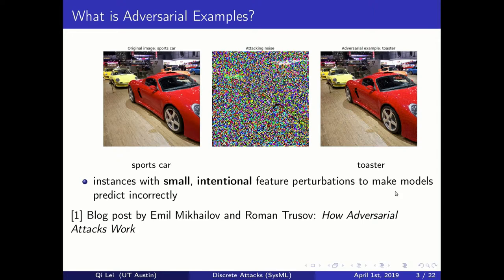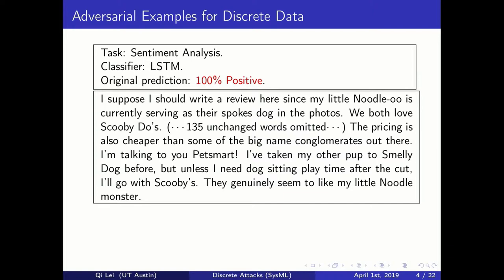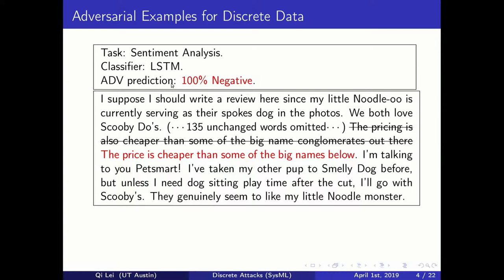This phenomenon not only applies for continuous data, but also for discrete data. Take this as an example: this is a Yelp review about a pet shop called Scooby-Doo's, and our task is to do sentiment analysis to tell if this is positive or negative. We can tell from the language that this is very positive, and the model can predict it as 100% positive. However, by conducting our adversarial attack, we can completely flip the prediction to 100% negative by simply paraphrasing one sentence — from 'the pricing is also cheaper than some of the big name conglomerates out there' to 'the price is cheaper than some of the big names below.' They have basically the same meaning, yet the model's prediction is completely wrong.